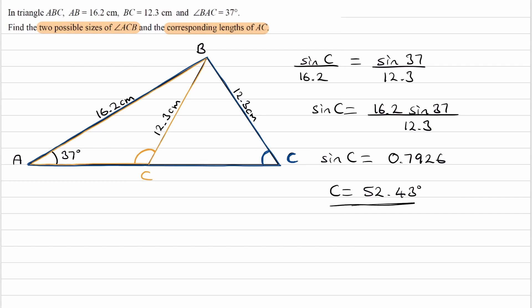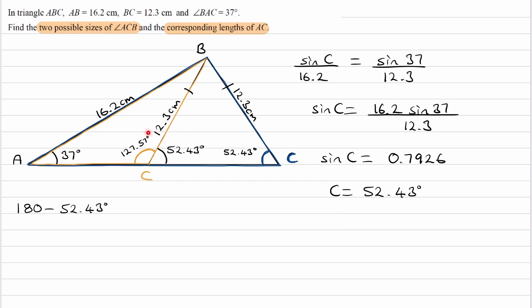Since 52.43 degrees is an acute angle — less than 90 degrees — it belongs to the blue triangle. To find the orange angle, we do 180 minus 52.43, giving 127.57 degrees. Why? Because the triangle formed is isosceles — both sides are 12.3 — so the base angle on the other side is also 52.43. Then, since angles on a straight line add to 180, the obtuse angle at orange C is 180 minus 52.43, which equals 127.57 degrees.